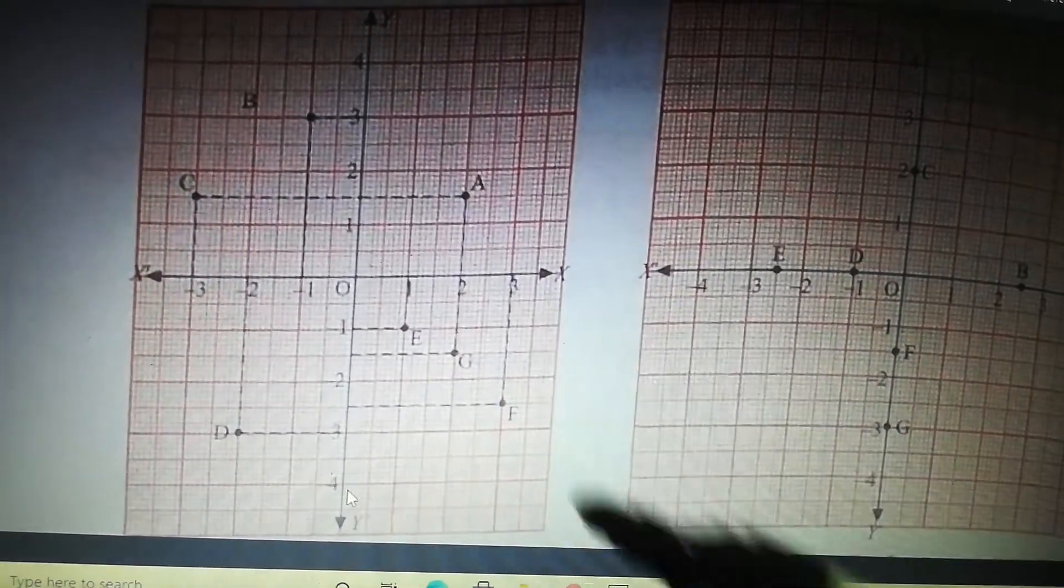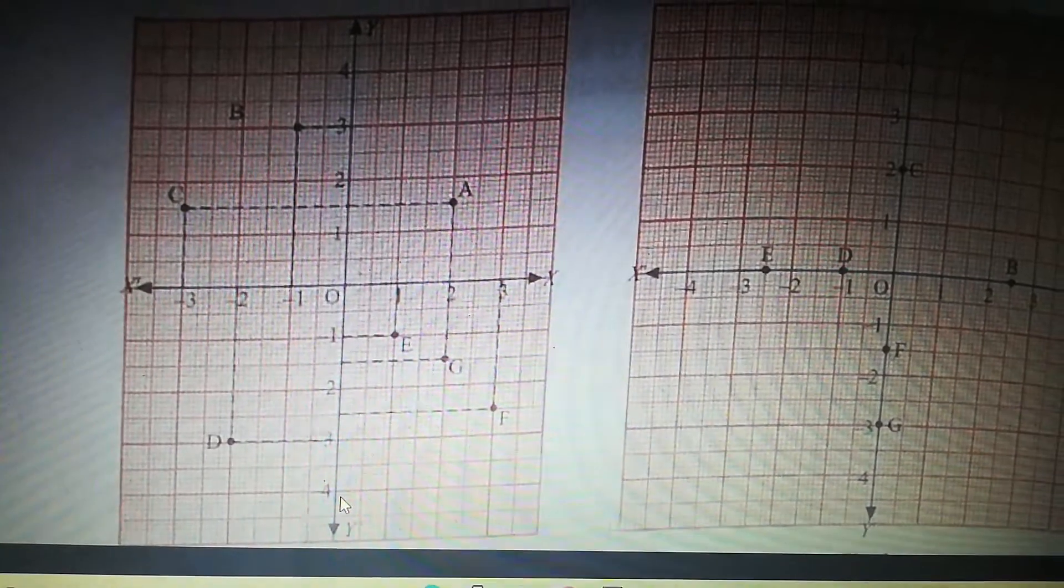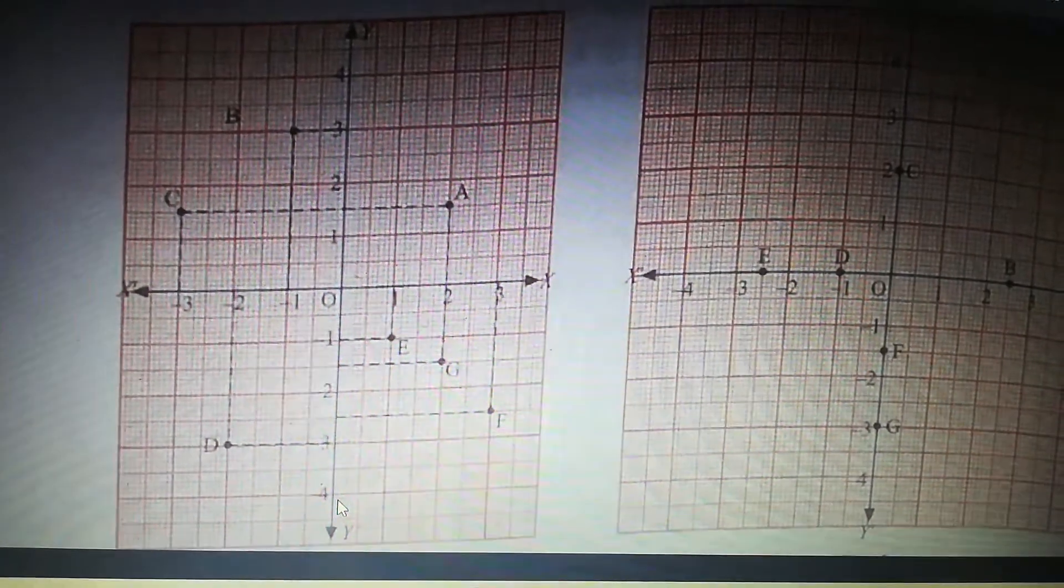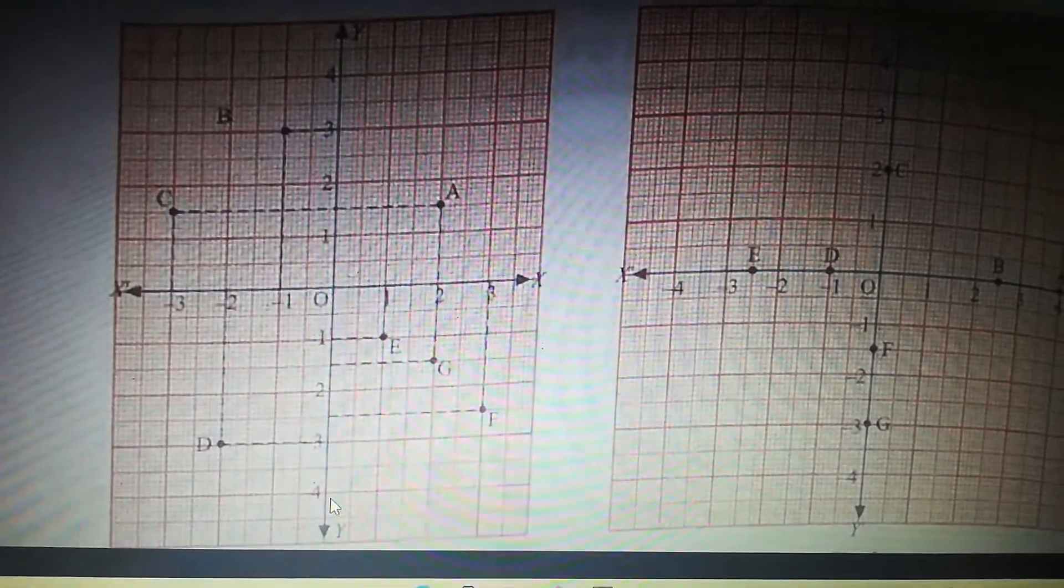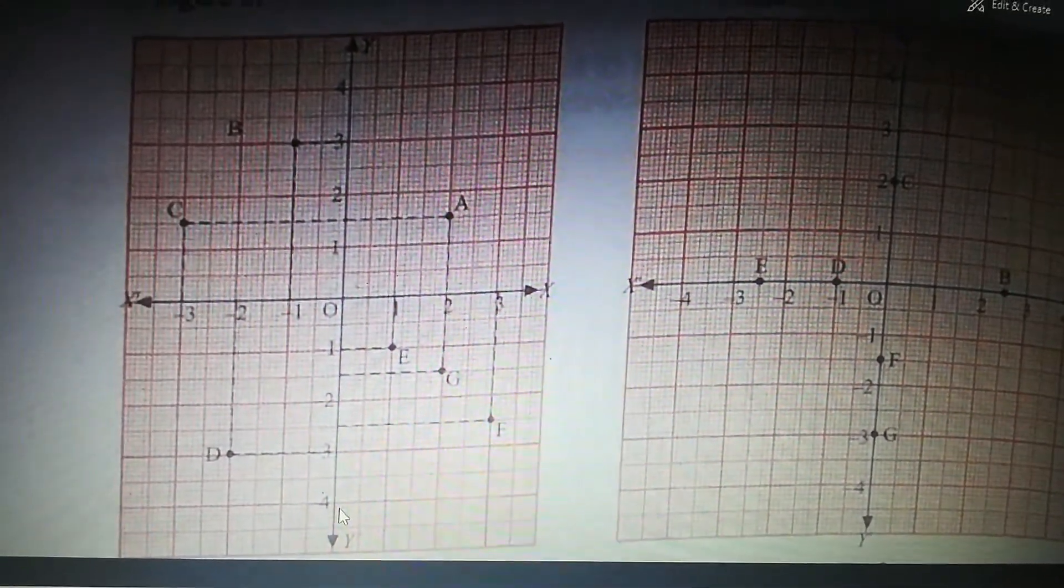And F is X is 3 and Y is 2 and 3 middle, so it will be 2.5. So we can take care, X is 3 and Y is minus 2.5.